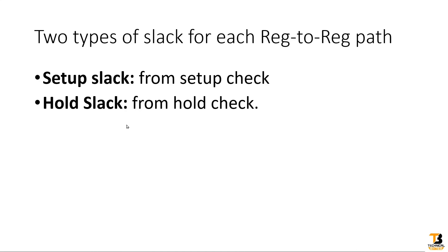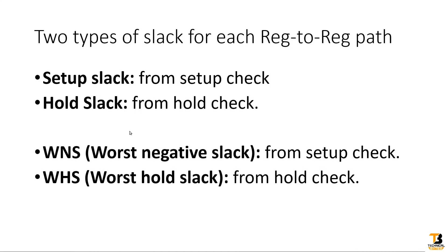After analyzing all the paths, the timing analyzer tool calculates the worst slack — worst setup slack. It is called WNS, Worst Negative Slack, for the complete design; this is the setup slack of the worst path. Another type of slack it reports is WHS, Worst Hold Slack — from the entire design, the worst hold slack path will be reported. So basically, for the Create Clock Constraint, the timing analyzer tool will report WNS and WHS in its timing summary.